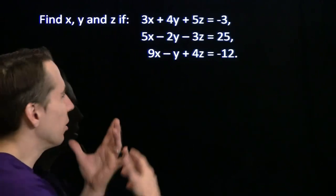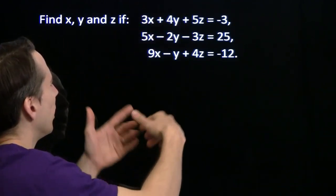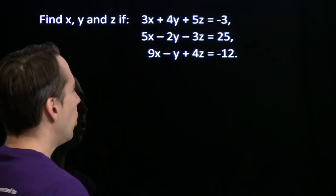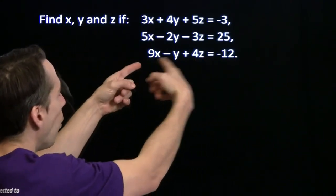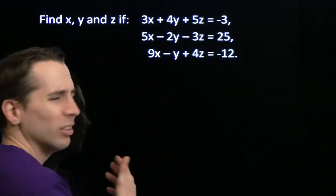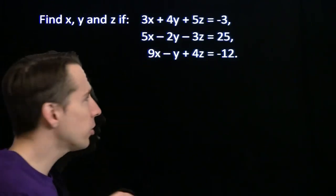It looks easiest to eliminate y. I can multiply this equation by two and add it to that one—poof, y is gone. I can multiply this one by four and add it to that one, y would be gone then as well. So I'm going to start by eliminating y.